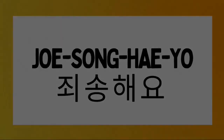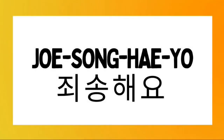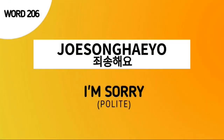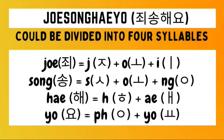Word number 206. Joesonghaeyo — this is pronounced as a four-syllable word. The first syllable is joe, second syllable is song, third syllable is hae, and the fourth syllable is yo. Pronounce it with me: joesonghaeyo. The word joesonghaeyo is a polite way of saying 'I'm sorry.' This is less formal compared to joesonghaemnida.